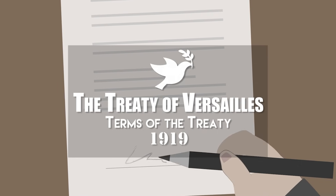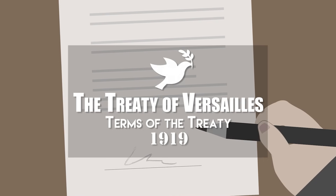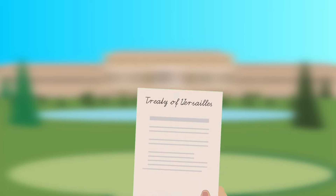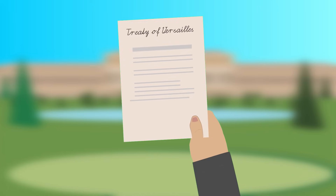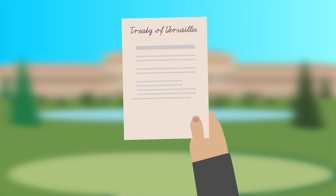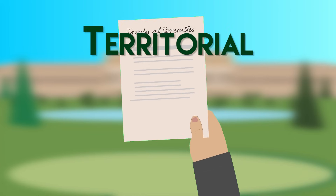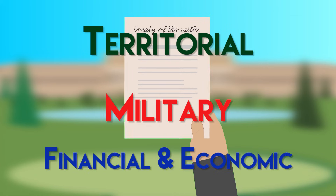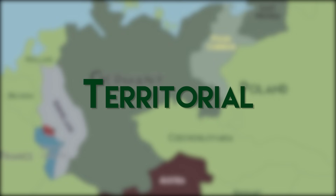The Treaty of Versailles, 1919. The terms of the Treaty of Versailles can be divided into three groups: territorial, military, and financial and economic. Here are some of the territorial terms.